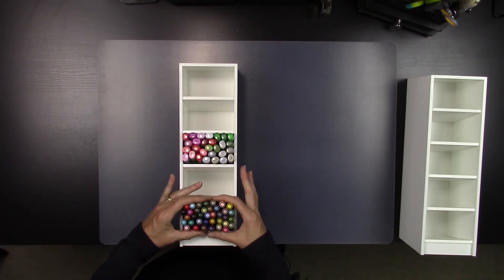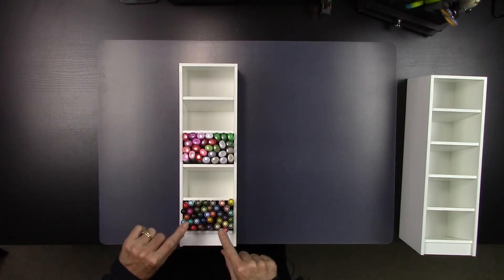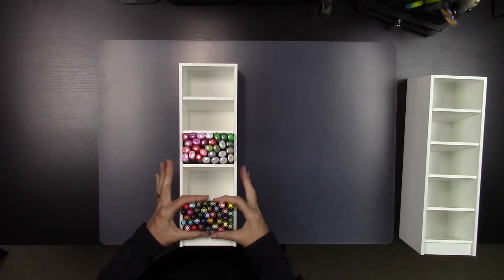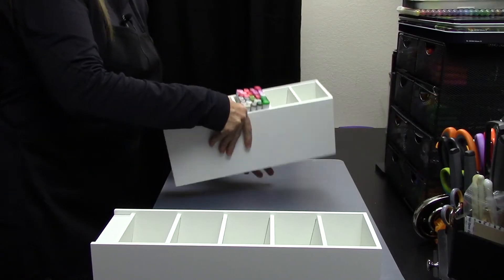Now because I just purchased a bunch of these Tim Holtz Distress markers, I wanted to see how many would fit in there, and I thought maybe you might be interested in that as well. And it holds, as you can see, 37 of these markers in one cubby. However, it is very snug, so I would probably put maybe 35 in here.